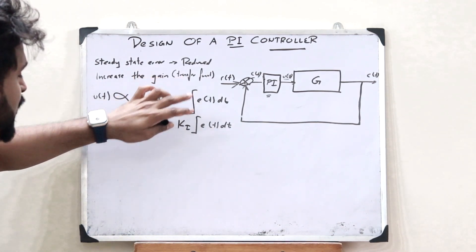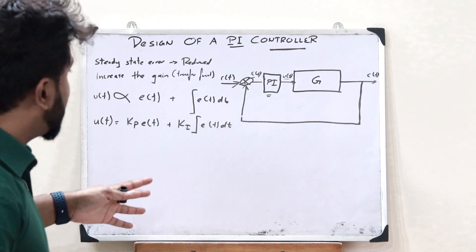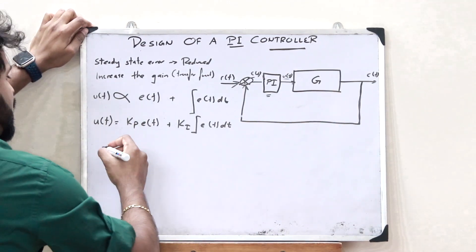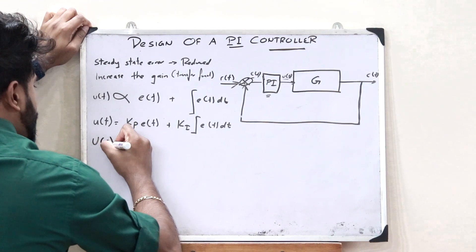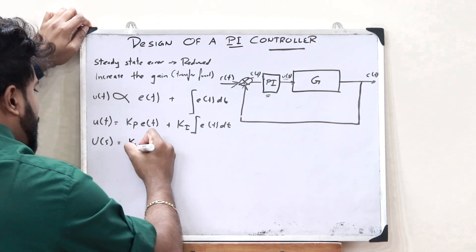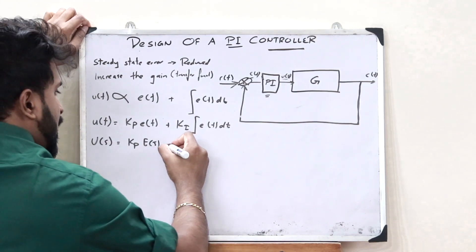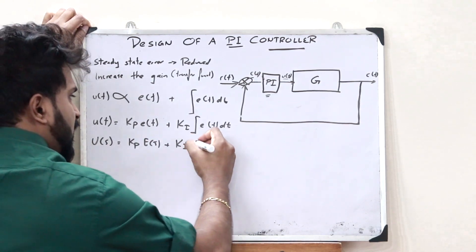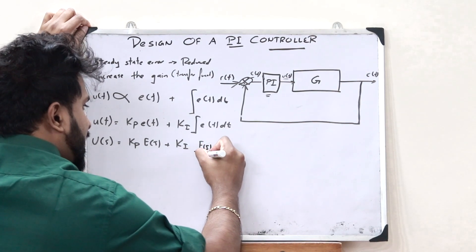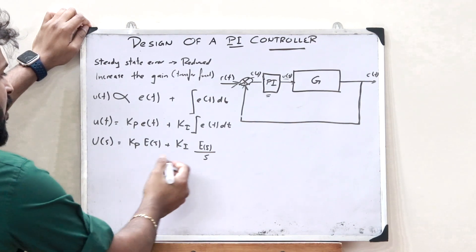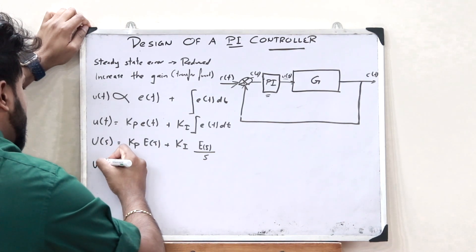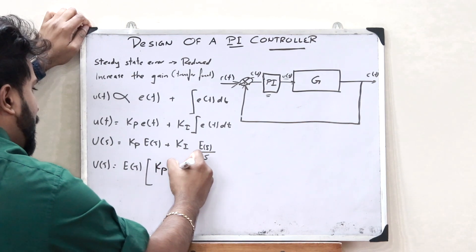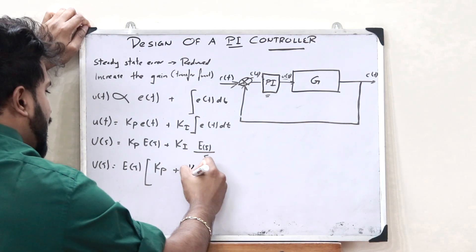In order to find the transfer function — which is the output divided by the input — we have to take the Laplace transform. On taking the Laplace transform, we get: U of S is equal to Kp into E of S, plus Ki multiplied by E of S divided by S, since the Laplace transform of an integral of a function is given as E of S divided by S. Upon taking E of S common outside, we get: U of S equals E of S multiplied by Kp plus Ki divided by S.